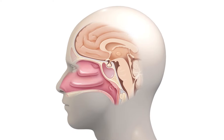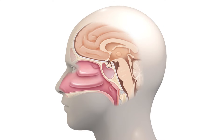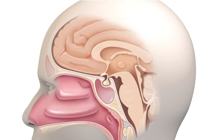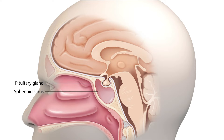Here we can see a side view of the patient's head, and we can identify the location of the pituitary gland at the base of the skull and deep into the nasal cavity. Here we can zoom in and see the relationship of the pituitary gland with the sphenoid sinus, at the deepest point of the sinonasal cavity and at the base of the skull.